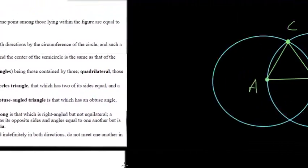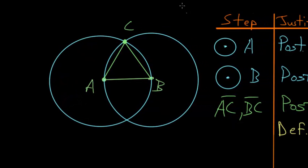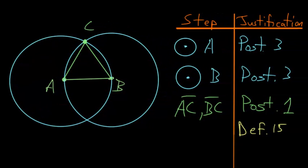So essentially, what this means is that if we draw any line from the center of the circle to the edge, they will be equal to any other line that we draw from the center to the edge. Or in other words, the radii of the circle are equal to each other. This is essentially the definition of a circle.